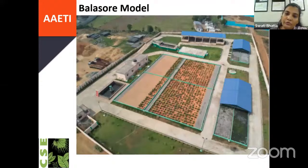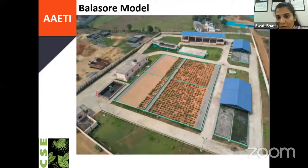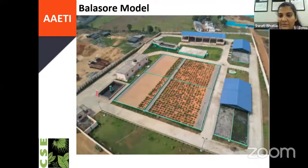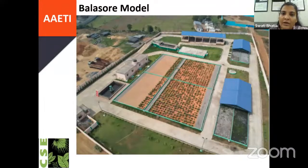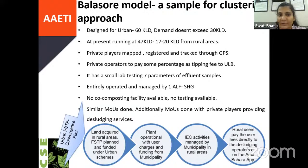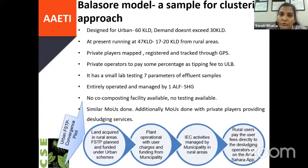The Balasore model was working on a similar basis, but this was an urban FSTP made on rural land—a 60 KLD FSTP while receiving only 30 KLD of sludge from urban areas. They were eventually venturing out informally into nearby rural areas for sludge. Once a formal letter was issued from the state, they formalized the entire process and are now receiving an additional 17 KLD of sludge from rural areas and are still expanding. An additional MOU was signed with private players, who were registered and had GPS monitoring installed in their vehicles to ensure they did not dump sludge elsewhere. Private operators were also made to pay a tipping fee to the ULB as a charge for dumping sludge in the treatment plant.